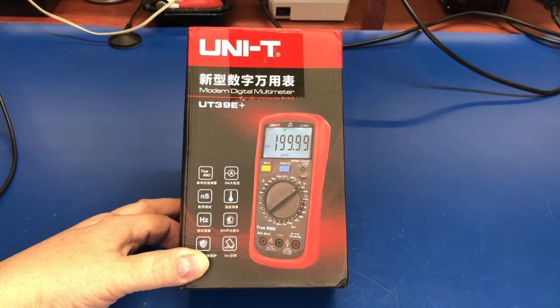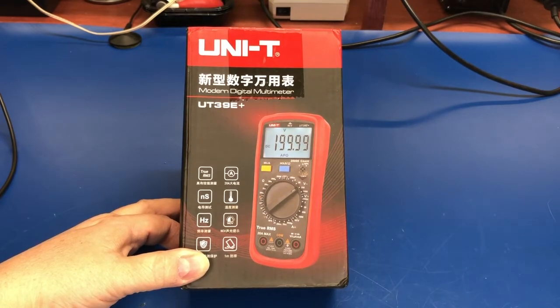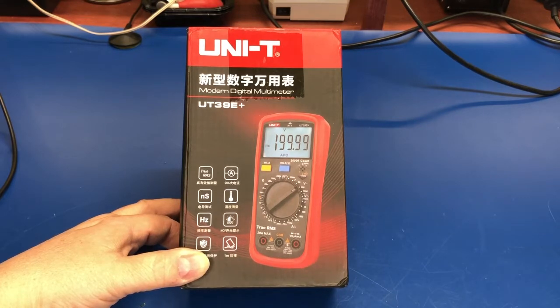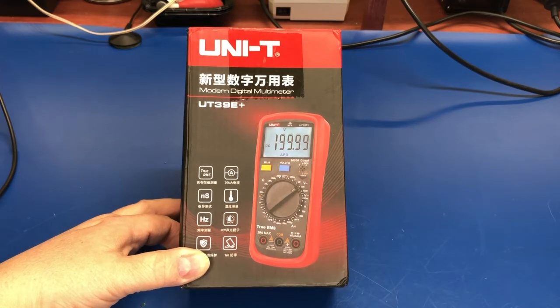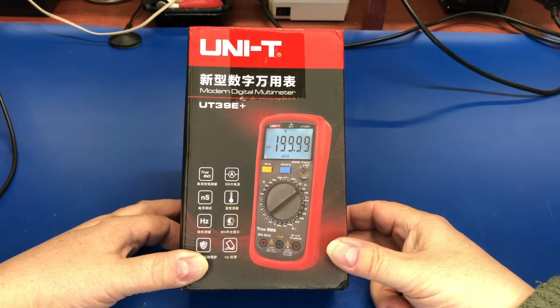Hey everyone, today we're going to take a look at the Unity UT39E Plus Modern Digital Multimeter. I just got this in the other day, picked this up off of eBay, cost me about $40, not a bad price.